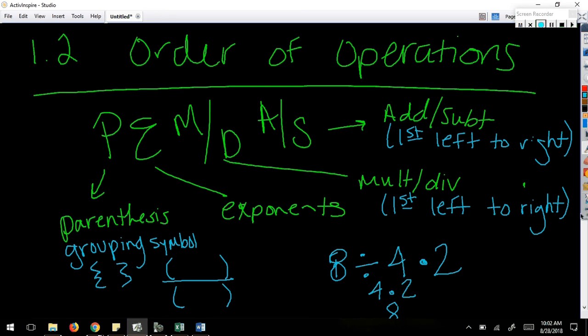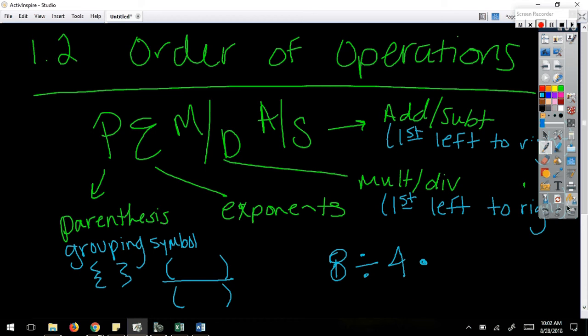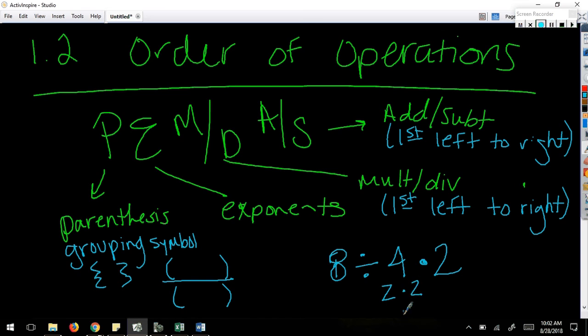I'm sorry, I'm getting so caught up in making sure you know the order that I'm going to do the math wrong. 8 divided by 4 is 2, times 2 is 4. But make sure, because this of every place students mess up with order of operations, it always happens here. Okay? Multiplication division are equal, addition subtraction are equal. It's left to right. Same way you read left to right, you read a sentence left to right, you read a mathematical expression left to right as well.